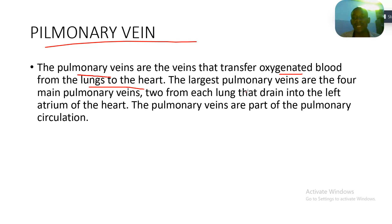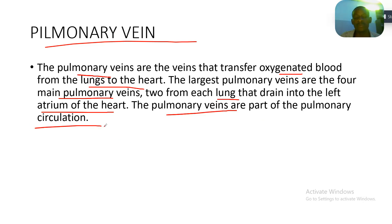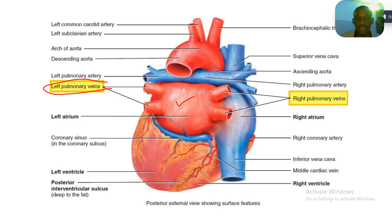The largest pulmonary veins are the four main pulmonary veins — two from each lung — that drain into the left atrium of the heart. The left side of the heart carries oxygenated blood and the right side carries deoxygenated blood. These pulmonary veins transfer oxygenated blood to the left side because they deal with oxygenated blood. The pulmonary veins are part of the pulmonary circulation. You can see in the picture the four pulmonary veins — two on the left and two on the right.